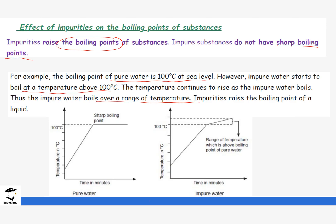The curve shows pure water and impure water. For pure water the curve is very straight with a constant, sharp boiling point of 100 degrees Celsius. But for impure water, when it gets to 100 degrees Celsius it is not constant or sharp — it continues to rise in a non-constant manner, increasing steadily over a range of temperatures. Comparing the two graphs, you can clearly see the difference between the sharp boiling point of pure water and the range of temperatures for impure water.